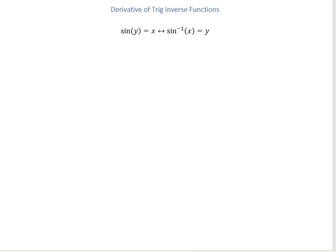Before we get started, the entire definition of an inverse is that it takes your inputs and your outputs and swaps them. So here we have sine of y equals x, which means that sine inverse of x equals y.